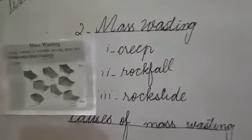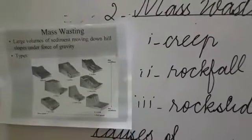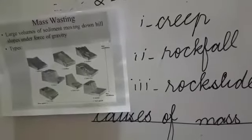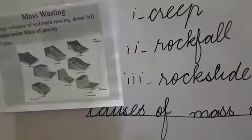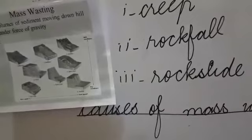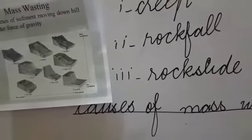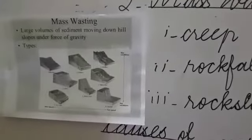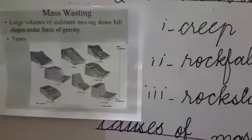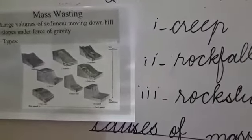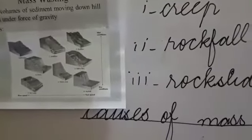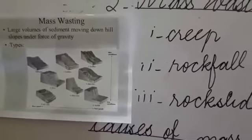What is Mass Wasting? Mass Wasting is the downward movement of the large pieces of rock and debris, soil due to the force of gravity. When the downward movement of large pieces of rocks, debris and soil due to the force of gravity is called Mass Wasting.